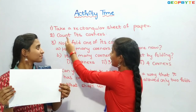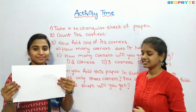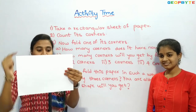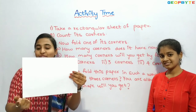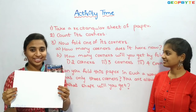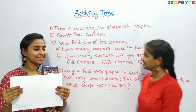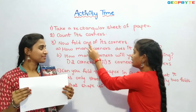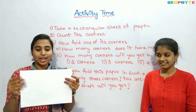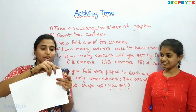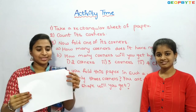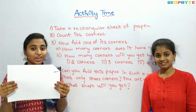Count its corners. Yes — one, two, three, four. It has four corners. Now fold one of its corners. Okay, I will fold this corner. Yes, I have folded.